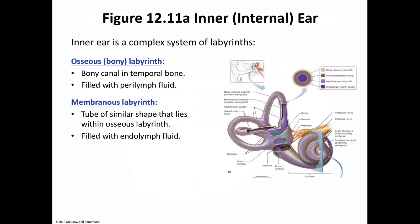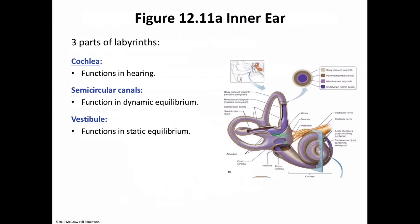The inner ear has three regions: the vestibule, the semicircular canals, and the cochlea. The vestibule is a bony chamber between the cochlea and the semicircular canals, involved in both hearing and equilibrium. We are now addressing not just how we hear but also equilibrium.